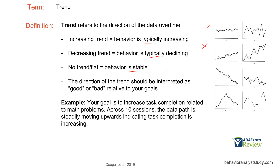Looking at some examples: graph A is very flat, graph B also shows no real trend and is pretty flat. Getting to C and D, we start to have upward trends. E and F have downward trends, and G goes up then down. H shows really no real trend at all - all over the place. Trend is not too difficult to assess, but be careful about something like B, where if you really want to look hard you could argue it's decreasing, when in reality it's very variable. For example, if your goal is to increase task completion related to math problems across 10 sessions and the data path steadily moves upwards, that indicates task completion is increasing.